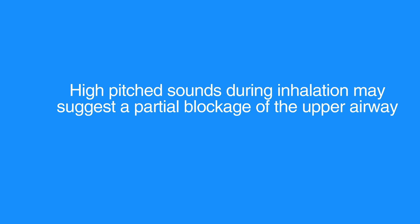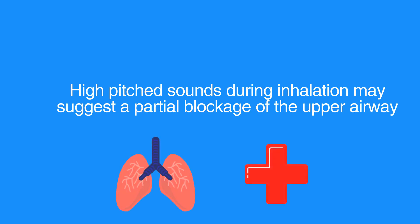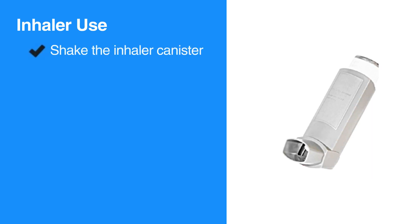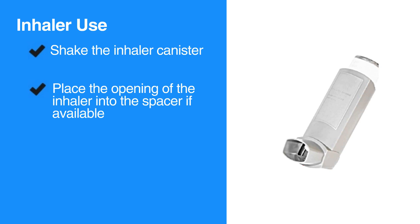Individuals who have asthma or chronic lung disease are generally familiar with how to use their breathing medications such as inhalers. To help an individual use an inhaler, first shake the inhaler canister. Then, place the opening of the inhaler into the spacer if available. Next, instruct them to fully exhale.